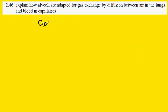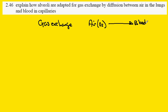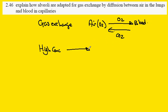Gas exchange in the lungs is about oxygen in air going into the bloodstream and carbon dioxide going in the opposite direction — adding oxygen to the blood and removing carbon dioxide. The process is called diffusion because the gases move from a region of high concentration to a region of low concentration.